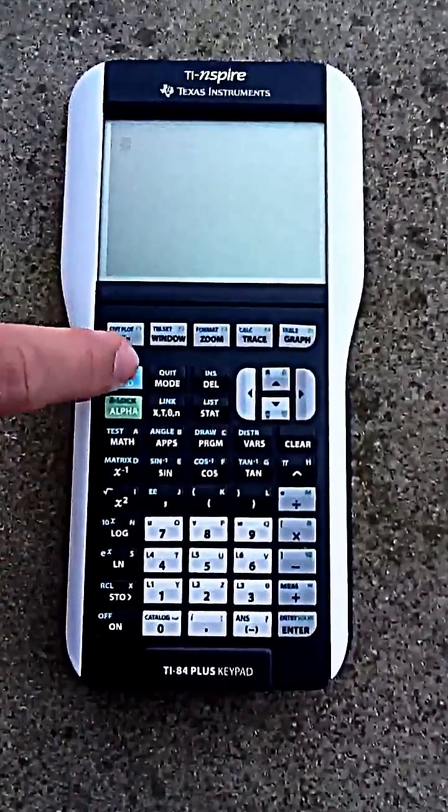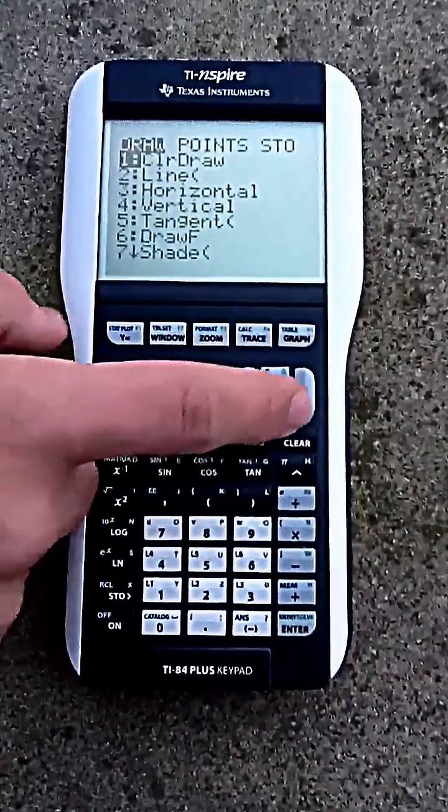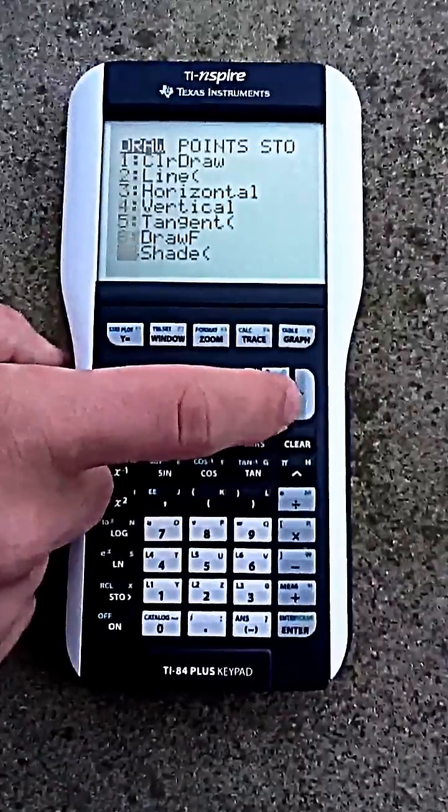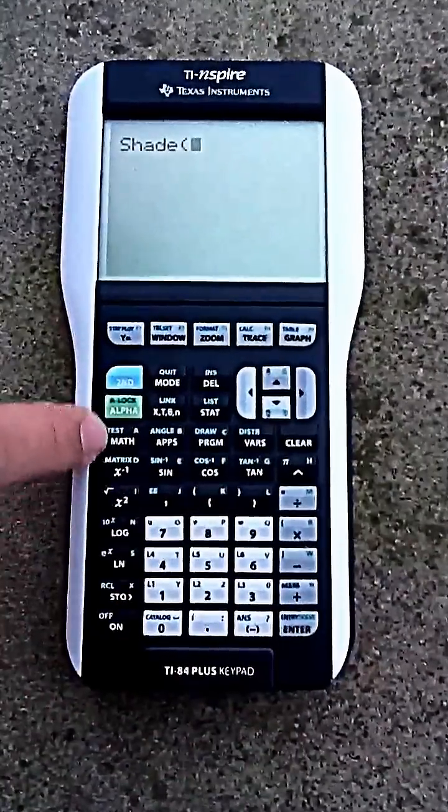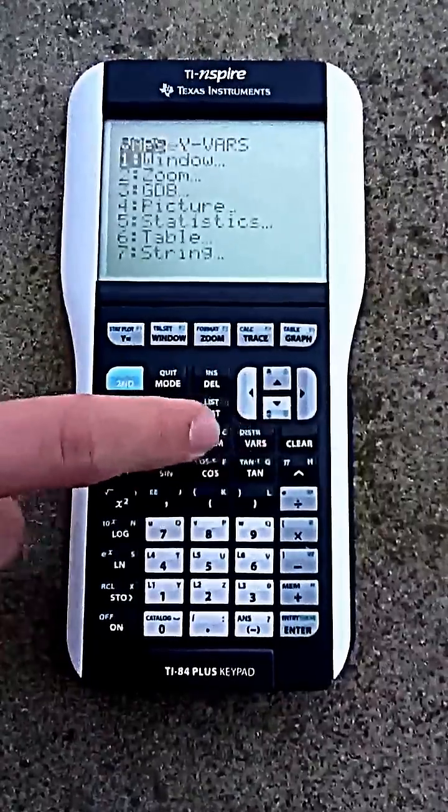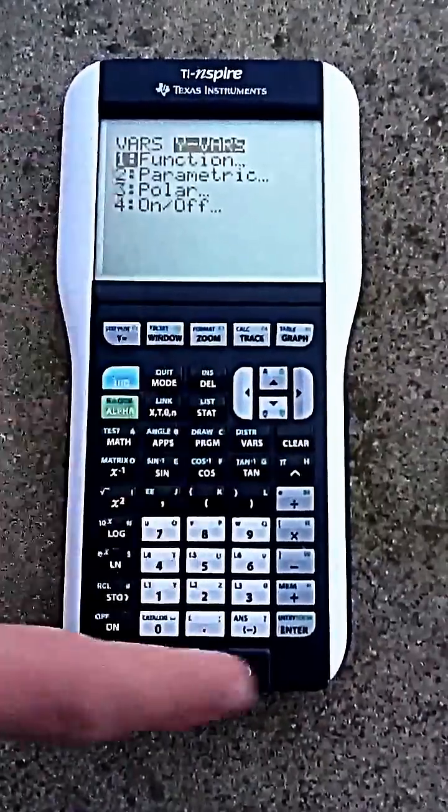Then you're going to go to second draw, go all the way down to number seven, which is shade. Click enter there. Then you're going to go to vars and go over to Y functions, enter.